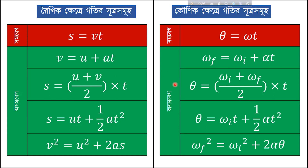Continuing the substitutions: θ = ωi·t + ½·α·t²; and ωf² = ωi² + 2·α·θ. These are the three rotational kinematic equations corresponding to the linear equations.